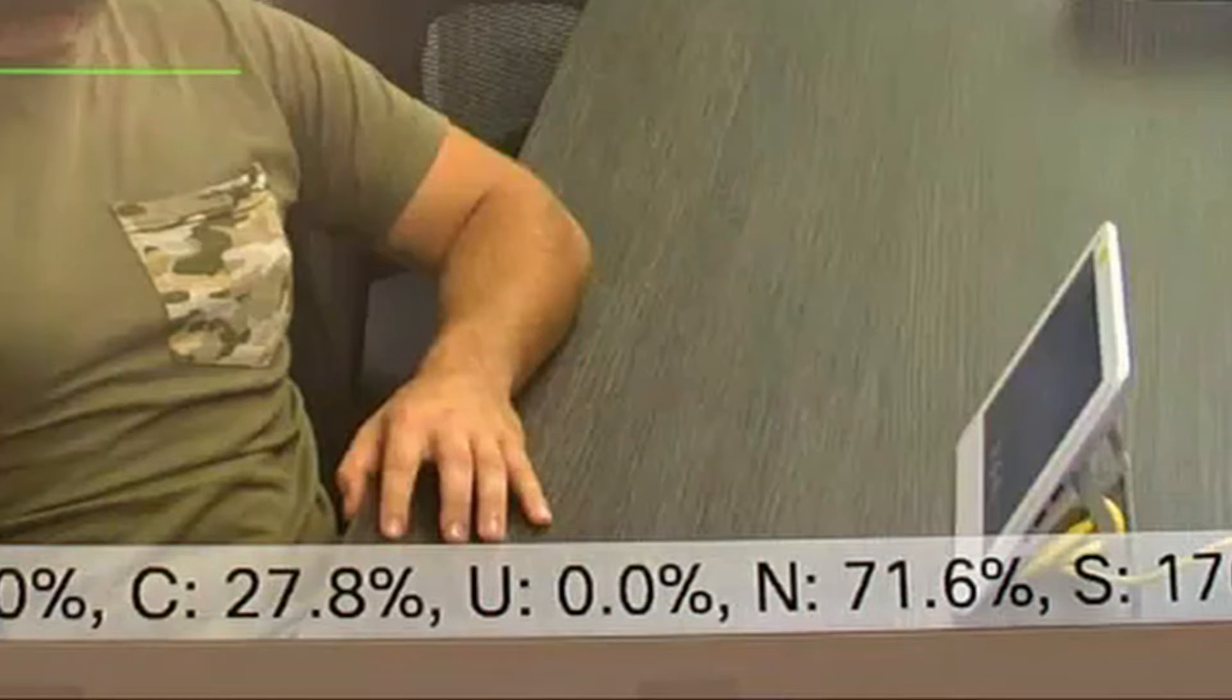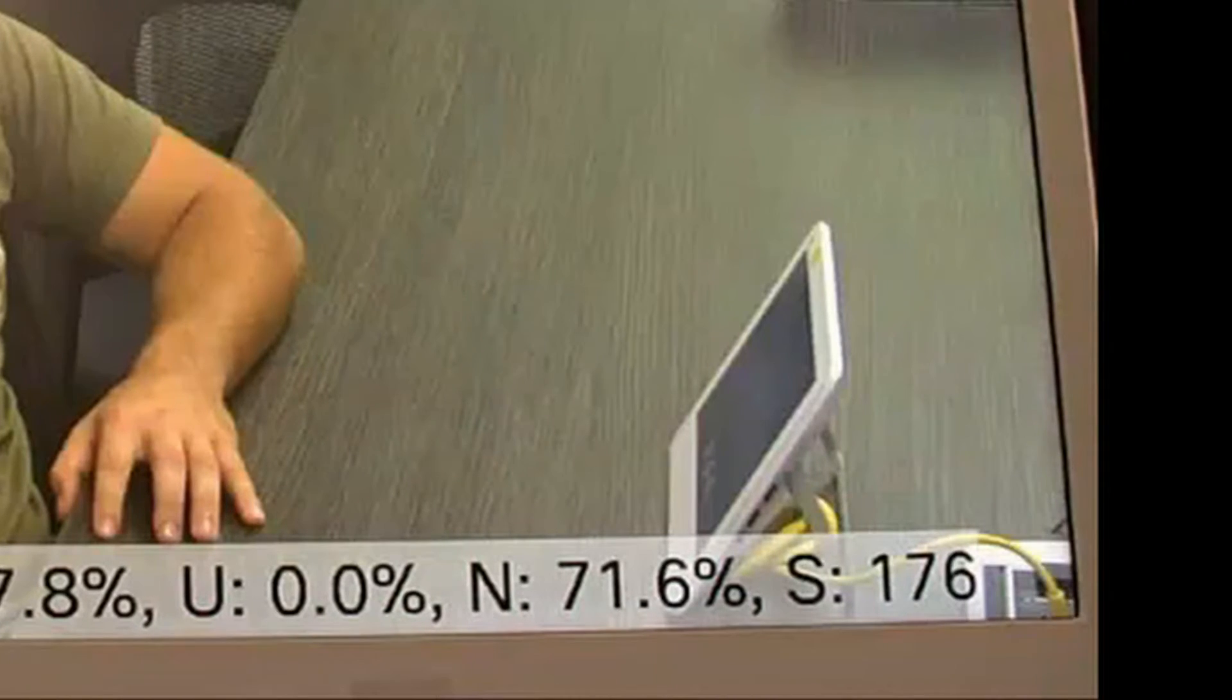U means ultrasound. This number should be low since ultrasound may interfere with tracking. You may see this number go up when Cisco Proximity is in use. N means silence. 100% means that no audio is picked up.